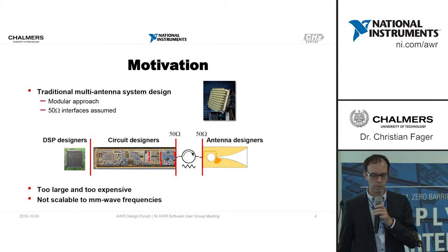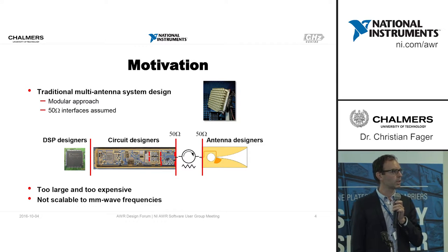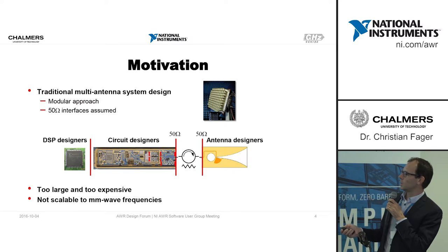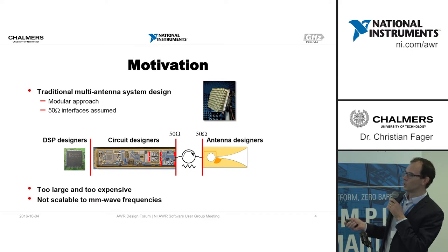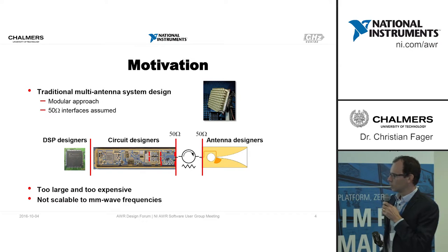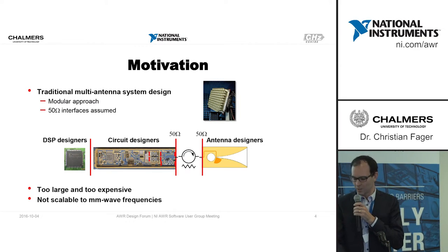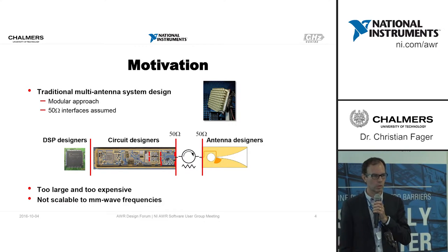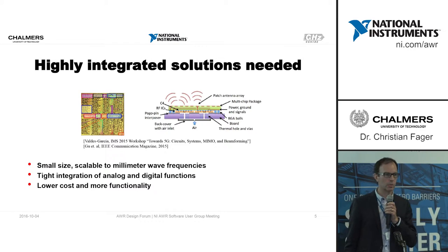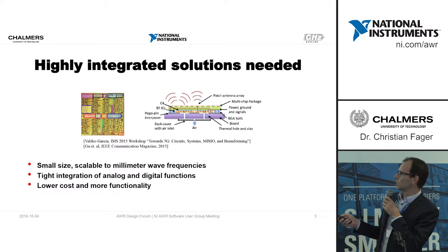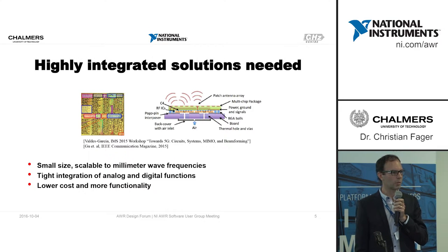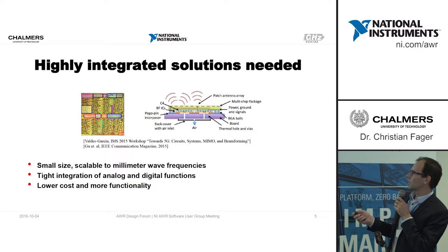The background and motivation is that traditionally multi-antenna systems have been designed in a very modular way — signal processing people don't easily communicate with circuit people, and circuit people don't easily communicate with antenna people. Fortunately we have the 50-ohm interface in between that allows independent work, or you can put isolators in between. But this is not the way to go for 5G and high-volume commercial applications. We need a much more integrated solution, particularly as we go up in frequency, both at the circuit level and at the package level, where interfaces become less well defined.